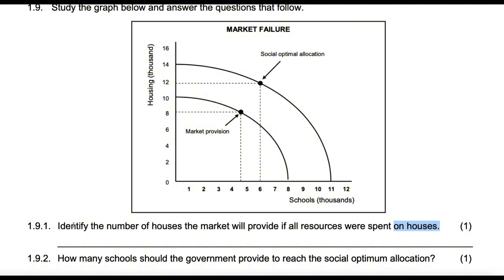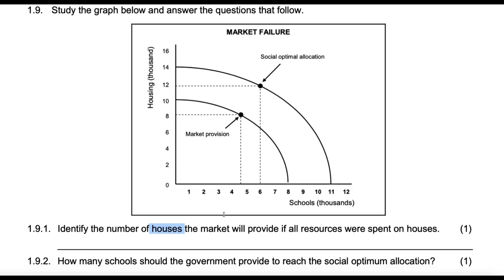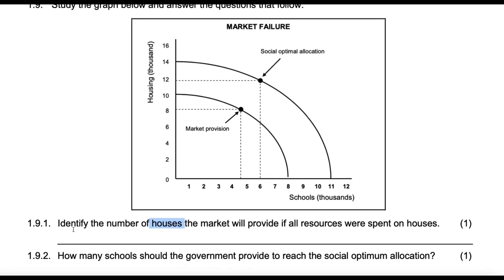So the answer to 'identify the number of houses the market would produce if all resources were spent on houses' is 10,000. I had initially started to say zero, but that would only be the answer if the question asked about schools — if you swap houses for schools, the answer becomes zero. So it's 10,000 houses.